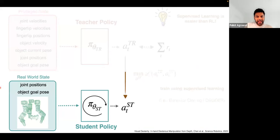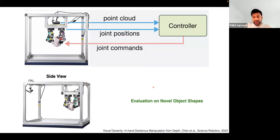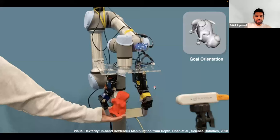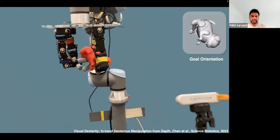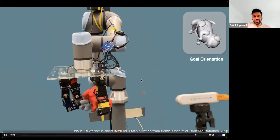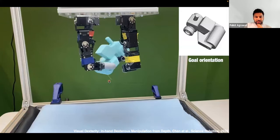We take the student policy and deploy it: we have the camera, take the point cloud, get joint positions, and output joint commands. All the videos I'm going to show are evaluating on new object shapes. Here's the first example — the camera looks at the system, a goal orientation is shown for the object, the hand takes the object to the right position and then moves to show the object is held stably. Here's another example where the hand reorients the object making and breaking contact all the time.